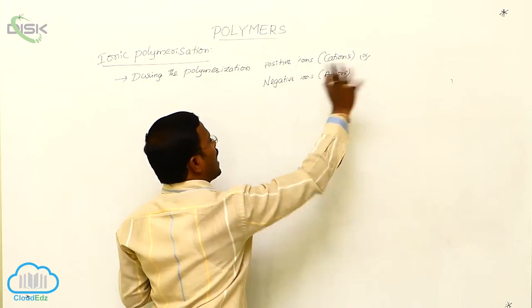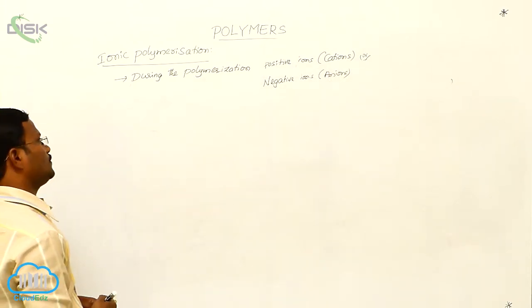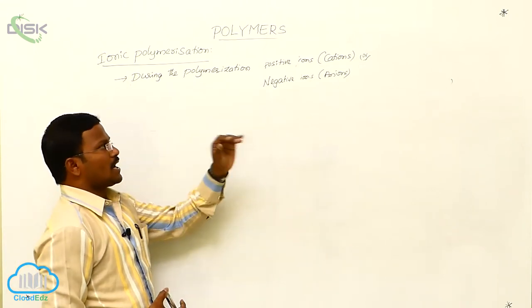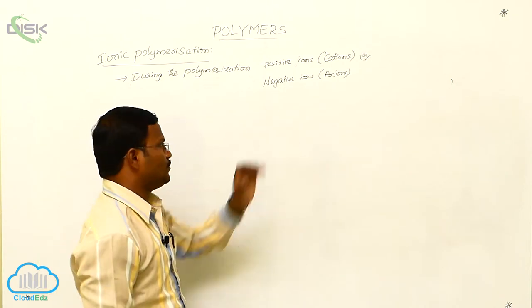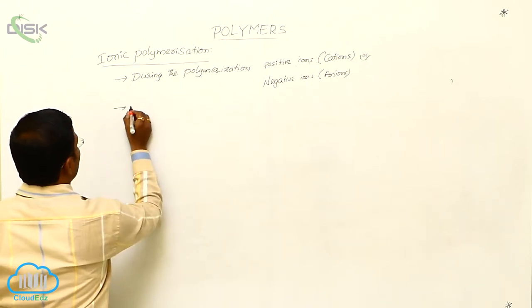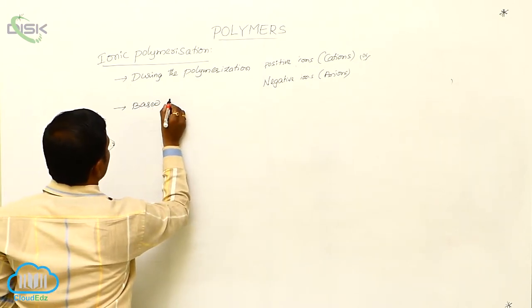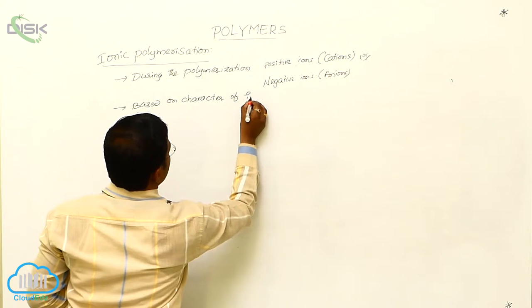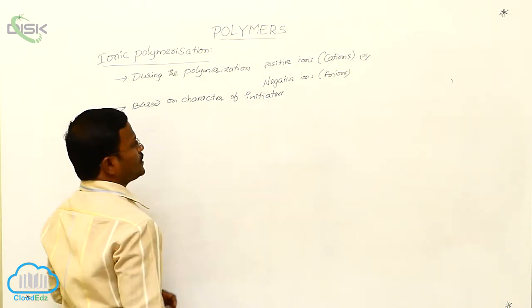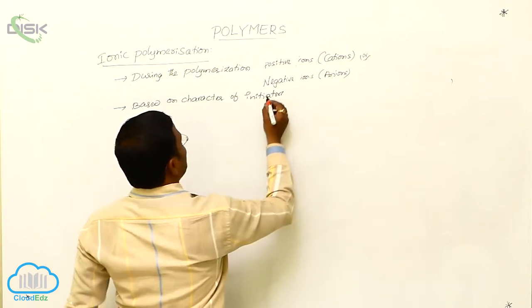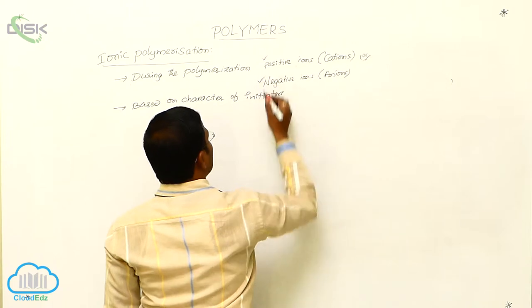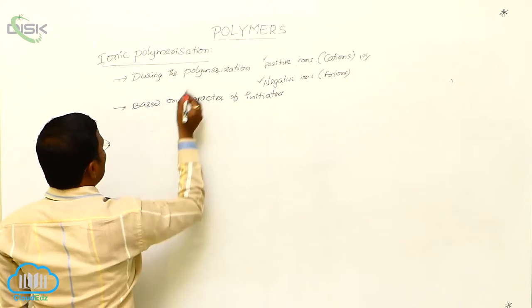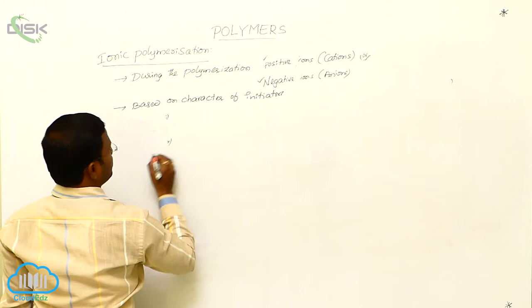Based on this phenomenon, the initiators for such polymerization reactions may be positive species or negative species. The initiators may be positive species, i.e., cations, or negative species, i.e., anions. Based on the character of the initiator, ionic polymerization is further classified into two types.